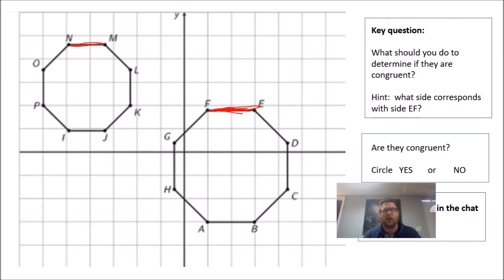You should be looking up here to NM. Now we need to see, again, are these the same side lengths, the same angle measures? You should be able to tell right away that no, these are not congruent.